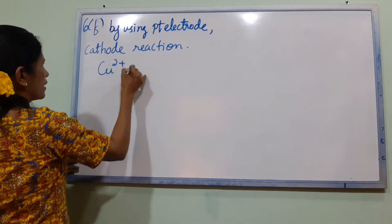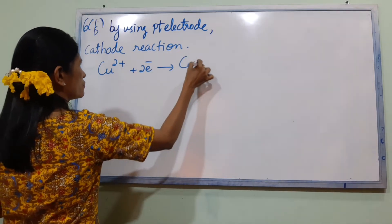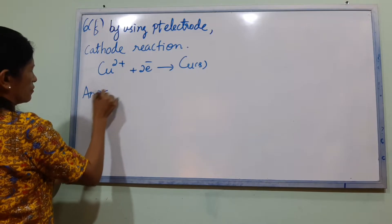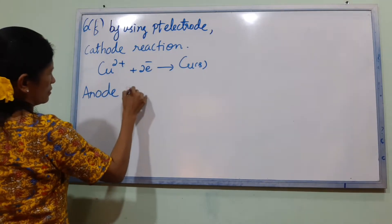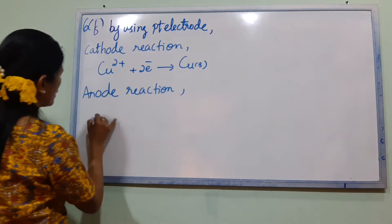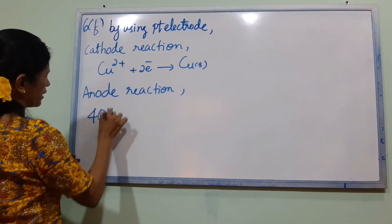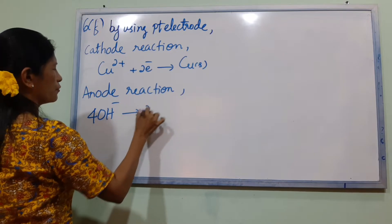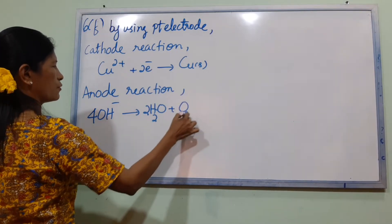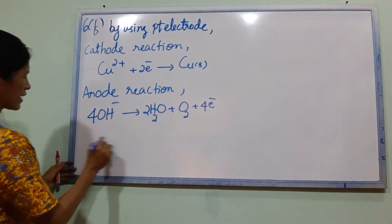Cathode reaction: Cu²⁺ + 2e⁻ → Cu (solid). Anode reaction: 4OH⁻ → 2H2O + O2 + 4e⁻.